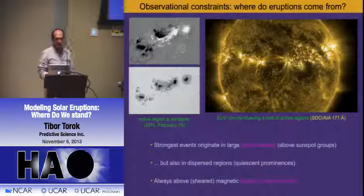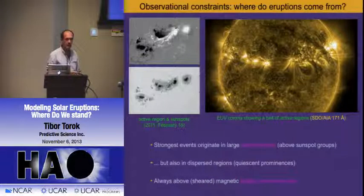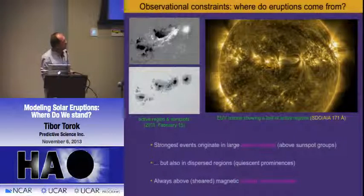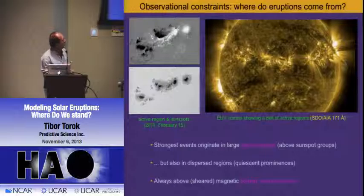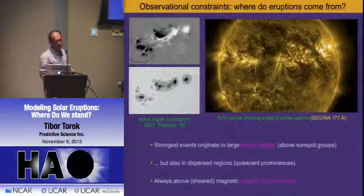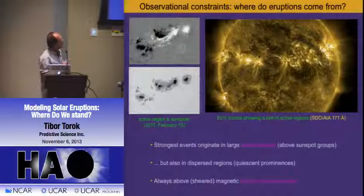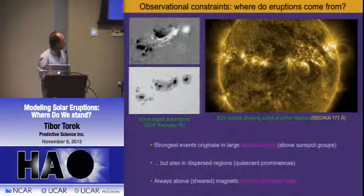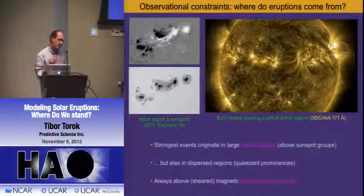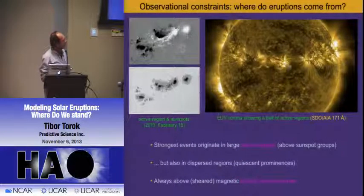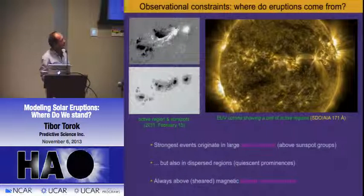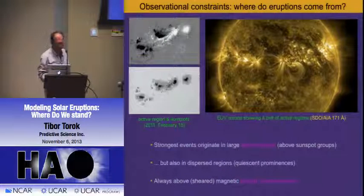Before we can do any modeling, we need a couple of constraints from observations. One thing we see is that at least the strongest, large events all come from large and complex active regions, mostly above sunspot groups. However, you also have CMEs and eruptions in quiet-sun regions, mostly involving large filaments, but they are neither very fast nor very energetic.